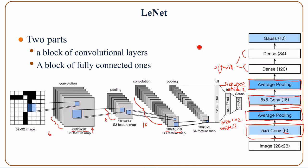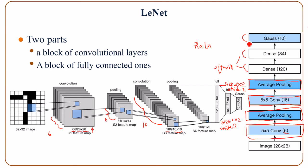It may work better if we use a rectified linear unit activation. However, in the 90s, this activation didn't exist yet. The last layer has 10 nodes for 10 outputs, and the number 10 here is the number of output classes — four digits from 0 to 9.